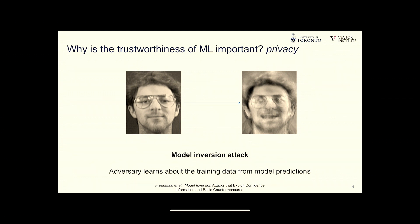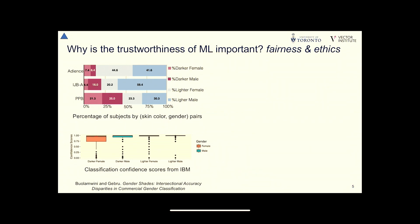Other aspects of trustworthy machine learning relate to societal components. As we deploy machine learning algorithms, we have to be careful that they are respectful of the data they analyze. One component is privacy: since we're using sensitive data, we have to be concerned that models may memorize training data. Researchers demonstrated this by taking a facial recognition model and reconstructing a face from a person in the training set. On the left is the actual person; on the right is the reconstructed image.